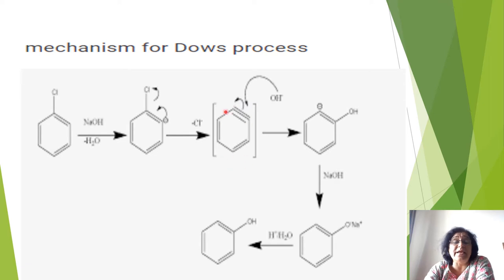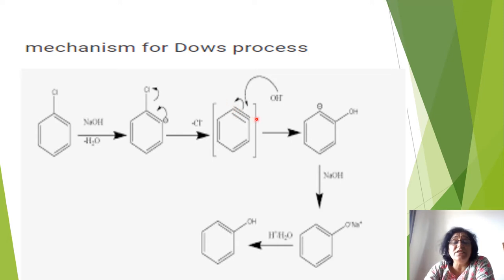This intermediate is called benzyne. You can see a triple bond on one of the bonds — the first two carbon atoms have a triple bond. Then OH⁻ again approaches the ring. The pi electrons of the triple bond move towards the first carbon atom, giving it a negative charge, while a positive charge is created on the second carbon and OH attaches there.